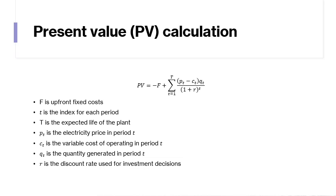In order to decide when to invest, companies need to figure out what the present value of their investment is going to be. Present value, PV, equals the negative of the fixed cost F, plus the sum from T equals 1 to capital T — the expected life of the plant, maybe 25, 50, or 100 years — times the sum of the prices Pt minus the marginal costs, so the marginal profits, times the quantity generated in period T, all discounted back to the present time period.